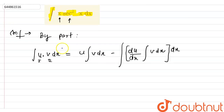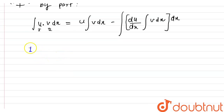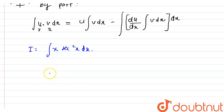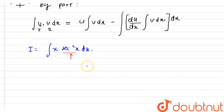I'll apply this formula to my question. My integral I is given as x·sec²x. The big question is: how do we choose the first function and the second function? Basically, if you know the direct integral of a function, assume that as your second function. I know the direct integration of sec²x, which is tan x, so I'm going to assume sec²x as my second function.